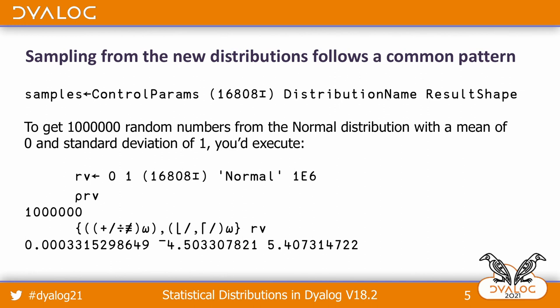Here's a case where we actually generated 1 million random numbers with a mean of zero and a standard deviation of one. As you see, we've got a million numbers, and with a short expression we can get things like the average, the minimum value, and the maximum value.